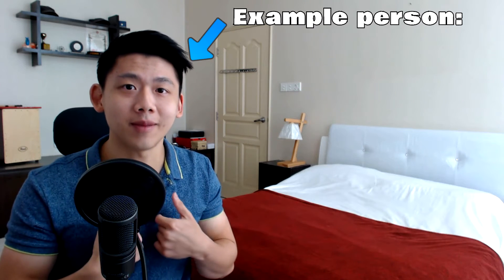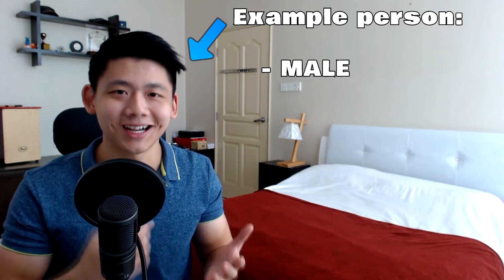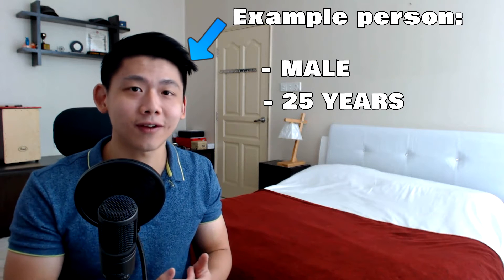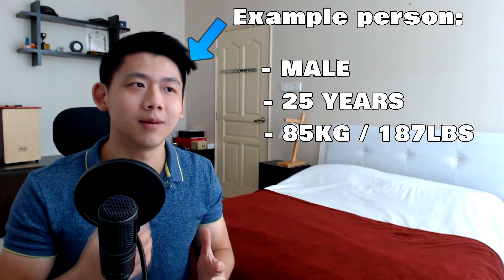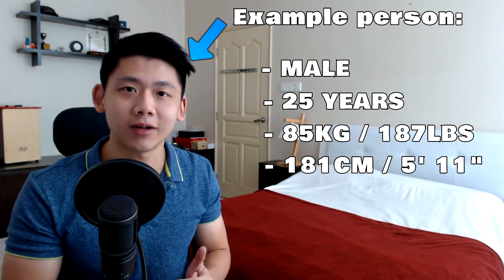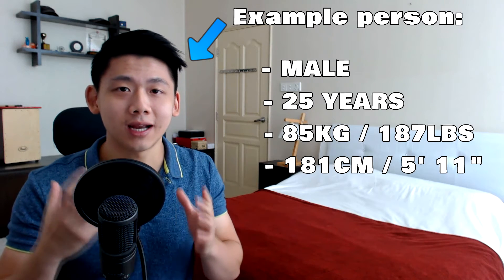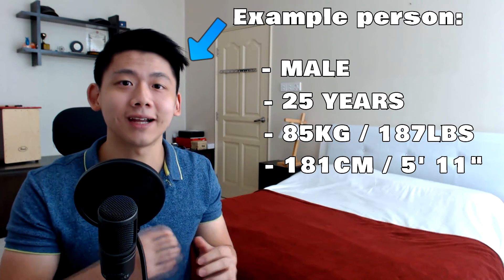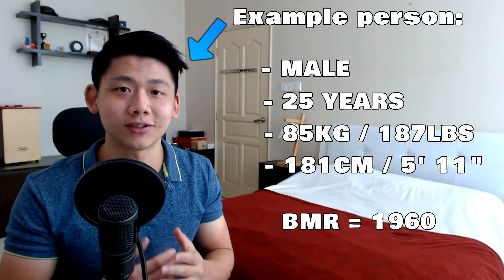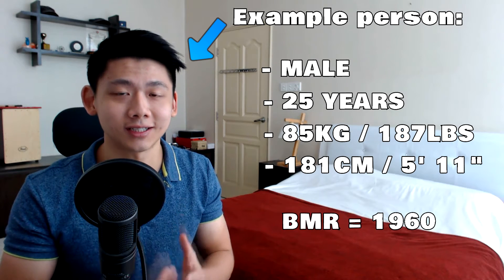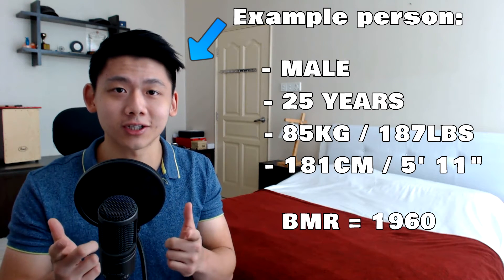For example, I'm a male, I'm 25 years old, I'm 85 kg which is 187 pounds, and I'm 181 cm which is 5 foot 11. I take that information, put it in the calculator, and I get a BMR of 1960. That's my BMR. Yours is going to be different, so go to the calculator, do that, and we'll move on to step two.